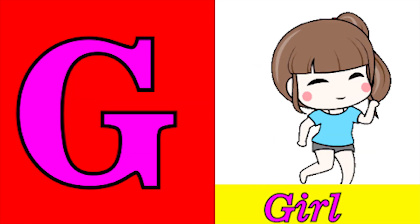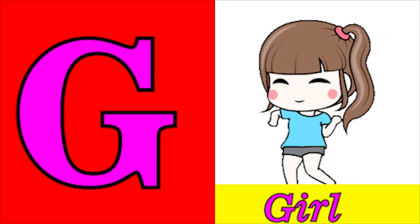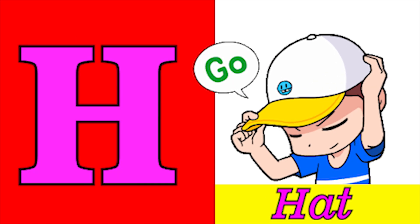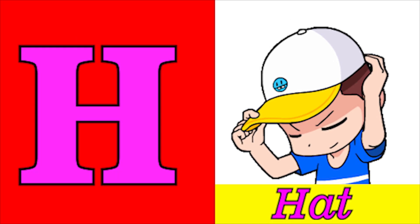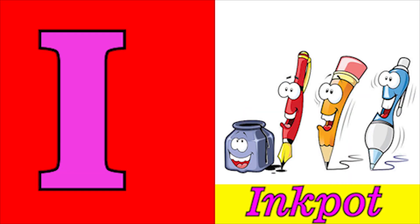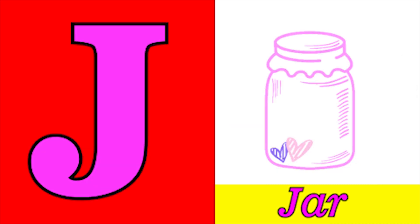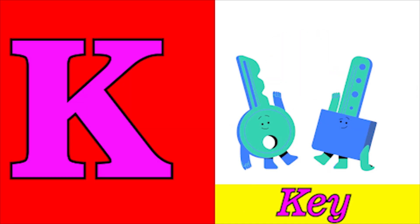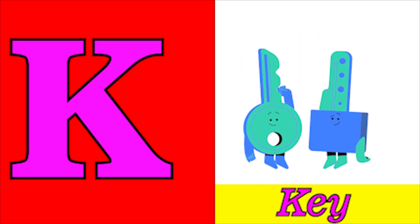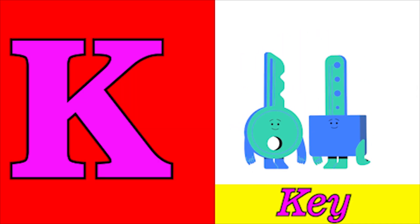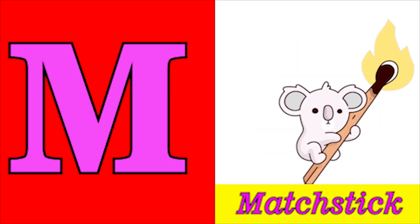G for gull, H for hat, I for ink pot, J for jar, K for key, L for leaf.